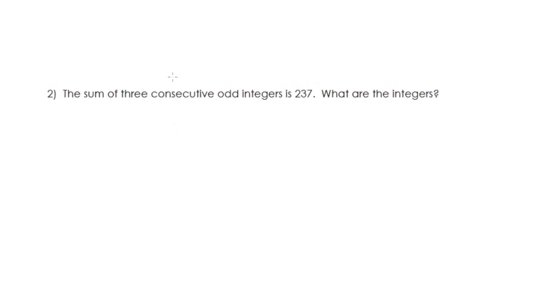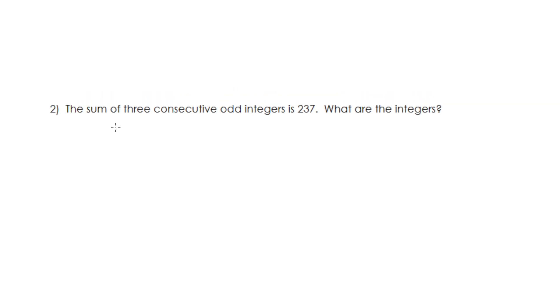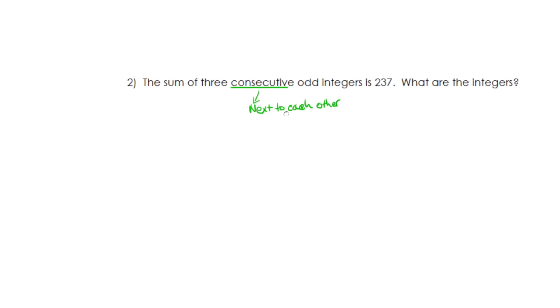This one doesn't fall so nicely into the y equals mx plus b equation, because we're talking about three different consecutive odd integers. Consecutive just means that they are next to each other. Odd is like one, three, five. Let's actually do a few examples of this. So three consecutive integers could be one, three, and five. These are odd and they are in order.